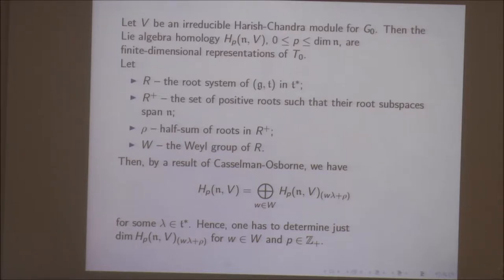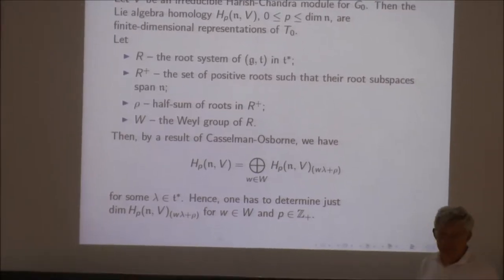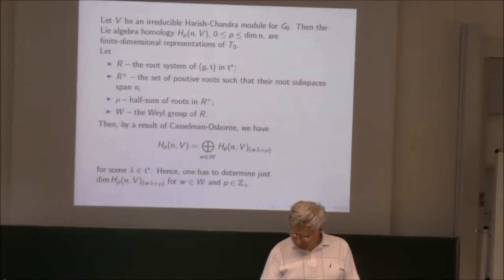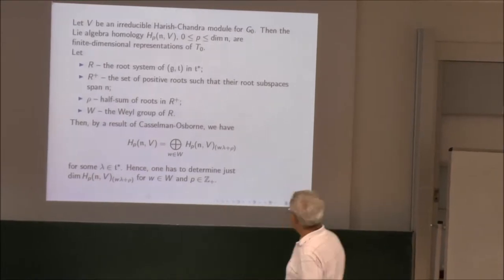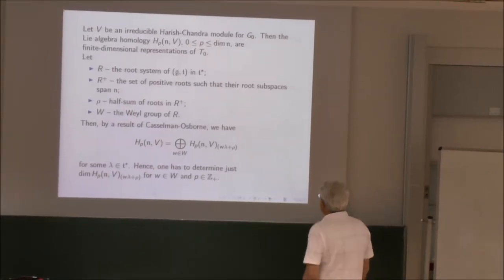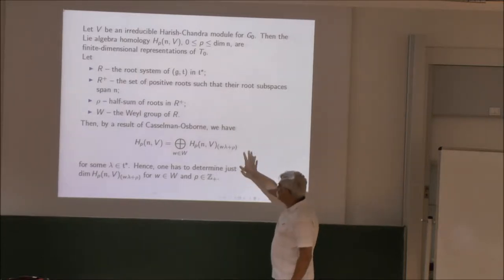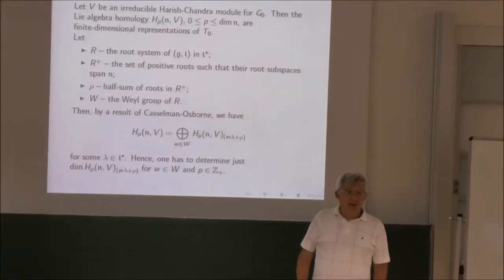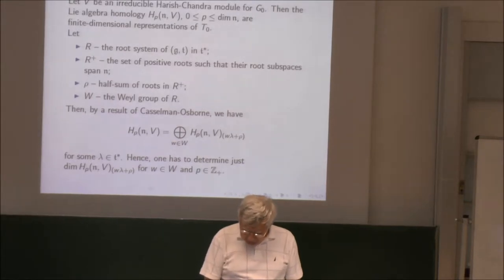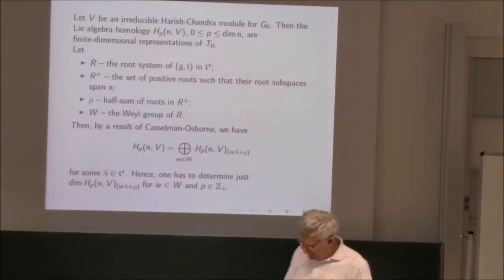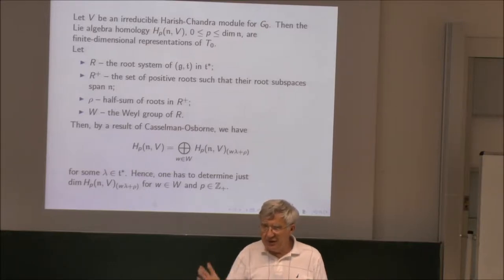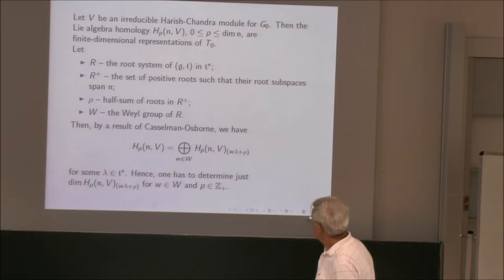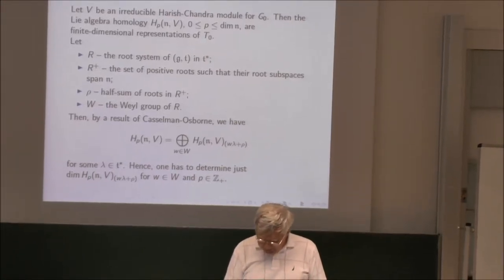Question: What is lambda — is that the infinitesimal character? Answer: Lambda is the infinitesimal character. Because our module is irreducible... This is just a very naive statement — these are the only weights which can appear in homology. This is what the Casselman-Osborne theorem says: that only these weights can appear. This is completely general — it is a very simple fact from homology.